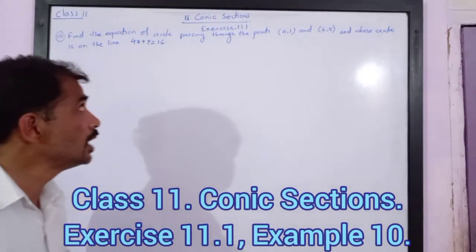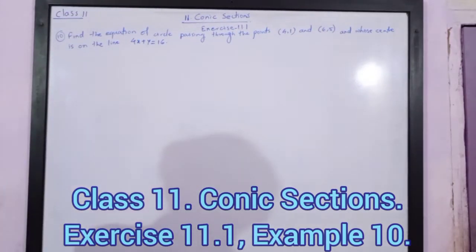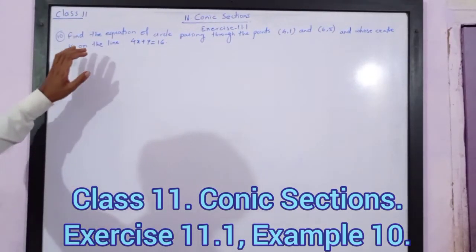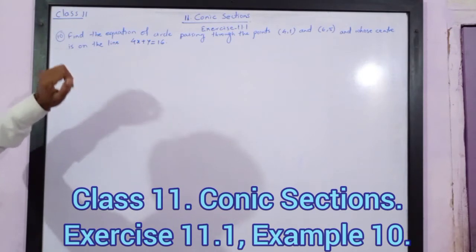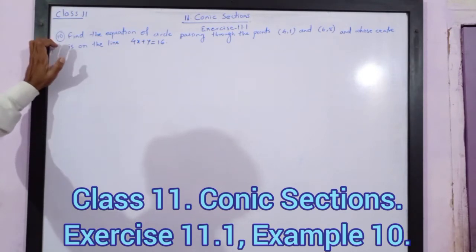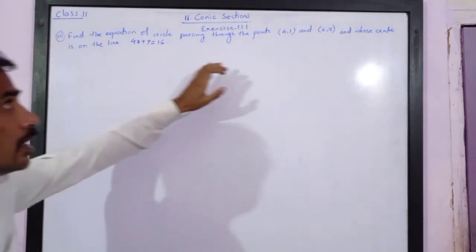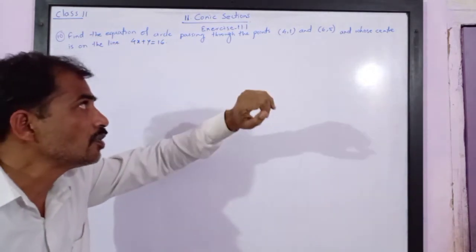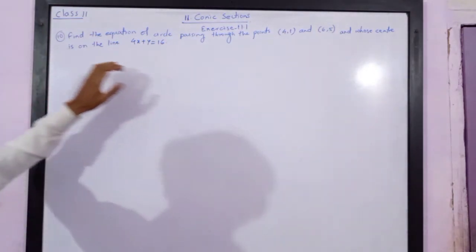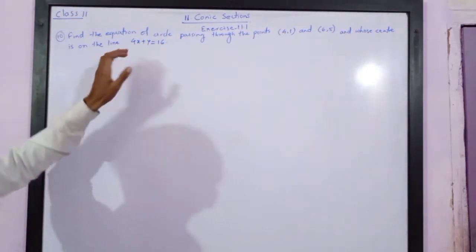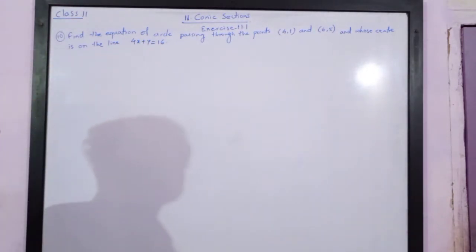Dear friends, next is exercise 11.1, question: find the equation of circle passing through the points (4, 1) and (6, 5), and whose center lies on the line 4x + y = 16.